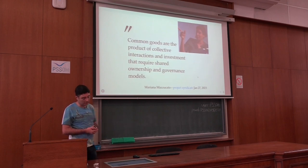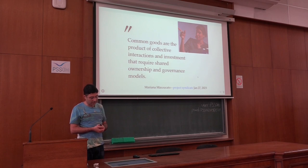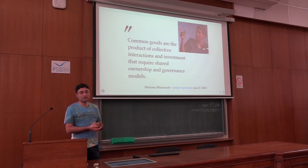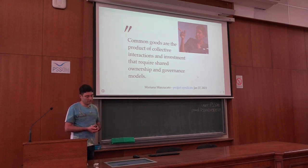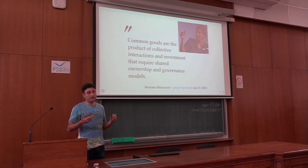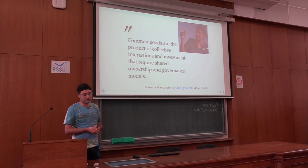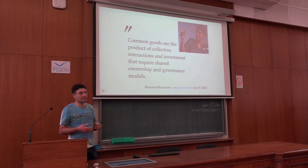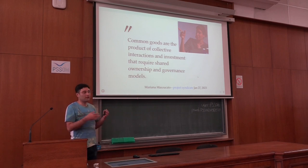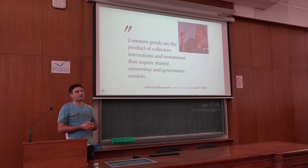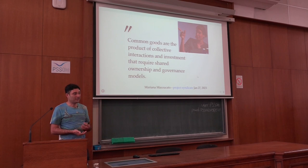In the same article she defines common goods: common goods are the product of collective interactions and investment that requires shared ownership and governance model. Maybe you know there was a Nobel Prize in Economics to Elinor Ostrom for the topic of commons already more than a decade ago. She showed that commons is not only about sharing, but also about the governance of that thing. We now have data commons, creative commons — all in the category of how you're going to run the commons. What I find interesting is that even though many economists now appreciate the topic of common ownership, somehow the connection with open science has not been made. I've read many of Mazzucato's books and she never mentions open science.